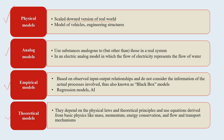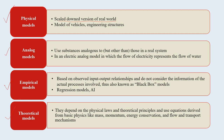The next is the analog model. In analog model, it uses substances analogous to those in a real system. For example, in an electric analog model, the flow of electricity represents the flow of water. Third is empirical model - these are largely based on observed input-output relationships and do not consider the information of the actual processes involved in the natural system, which is why they are known as black box models. Examples include regression models and artificial intelligence.